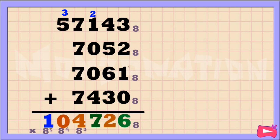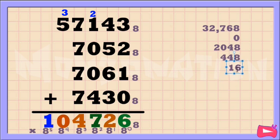1 times 8 to the power of 5 is 32768. Next, 0 times 8 to the power of 4 is just 0. Next, 4 times 8 to the power of 3 is 2048. Next, 7 times 8 to the power of 2 is 448.